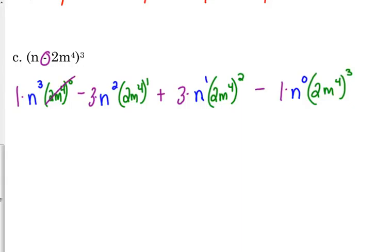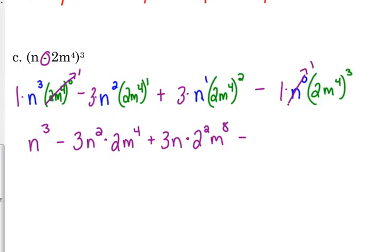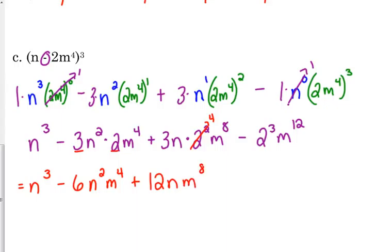Alright, so let's simplify. Anything to the 0 is 1, so that first term is just n cubed. We've got minus 3n squared times 2M to the fourth. Plus 3n times 2 squared, m to the eighth. Minus 2 cubed, m to the fourth. Last bit of simplifying: we've got n cubed minus 3 times 2 is 6, n squared m to the fourth. 2 squared is 4, so 3 times 4 is 12, n m to the eighth. Minus 8, m to the twelfth.